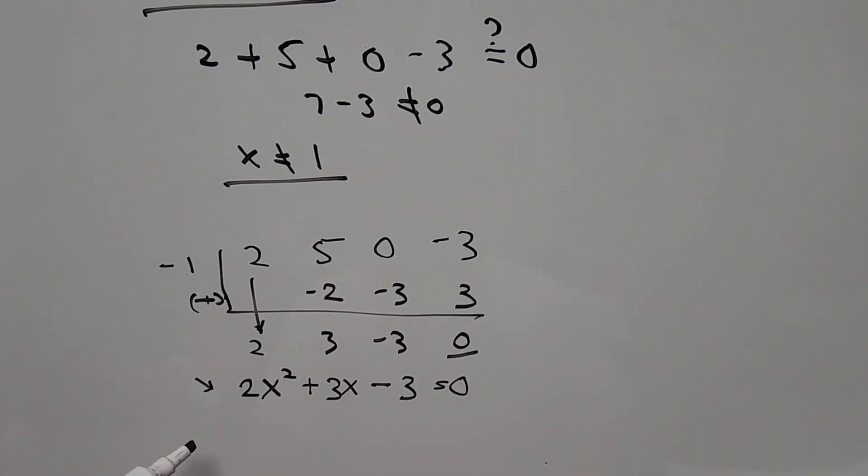What we're going to do is use the quadratic formula to find the value of x. So x is equal to -B, that's B is 3, so -3 ± √(B² - 4AC). That's 3², that's 9, minus 4 times A is 2, times C is -3. All over 2A, so 2 times 2, that's 4.